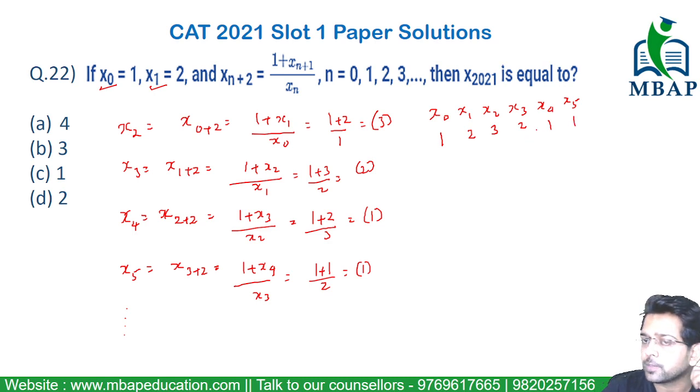Now if you solve this, you will see a series of first 5 terms starting with x₀ to x₅. I repeat, starting with x₀ to x₄, there are 5 terms in this series: 1, 2, 3, 2, 1. x₅ will also be 1.